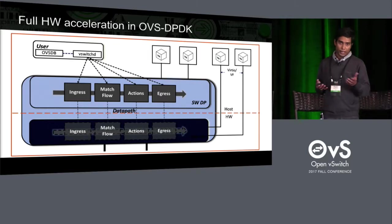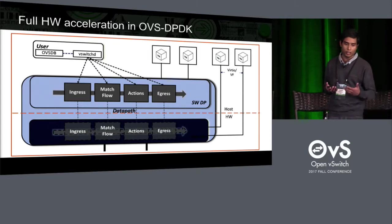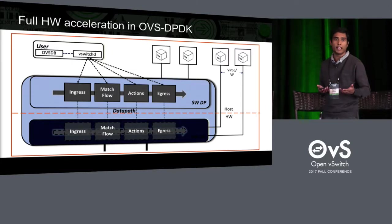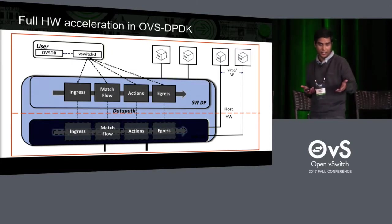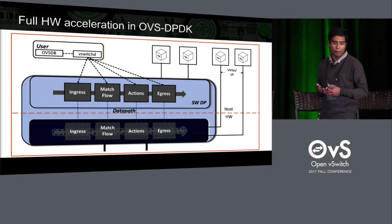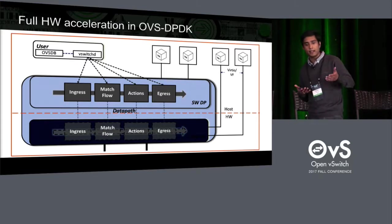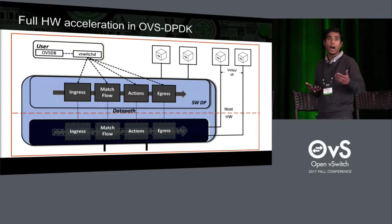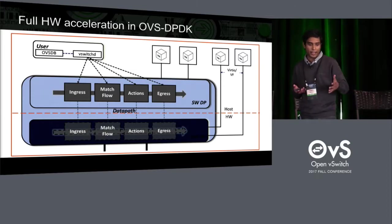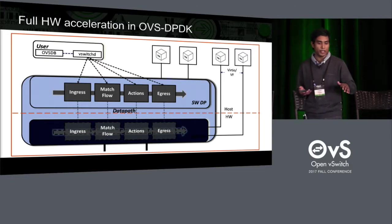Full hardware acceleration is different. The hardware is more sophisticated and can do much more than partial offload — it has a complete packet processing pipeline. It also has a back-end to connect to VMs, either through PCI pass-through or a VHOST back-end so the VM can talk to the hardware directly. When a packet lands on the hardware, it is handled end-to-end in the hardware itself.